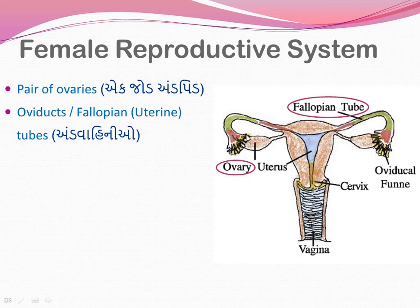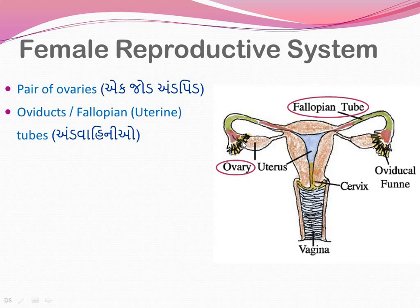The fallopian tube has three regions. The region nearest to the ovary is called the infundibulum - it is a wider, funnel-like part. Then there is a slightly bulged part called the ampulla. The connecting part between the ampulla and the uterus is the isthmus - a narrow part that joins the ampulla to the uterus. These are the three parts of the fallopian tube: infundibulum, ampulla, and isthmus.